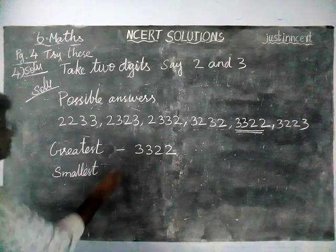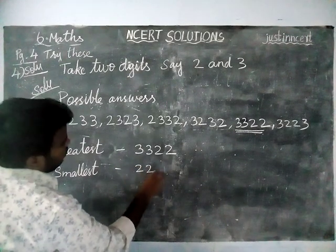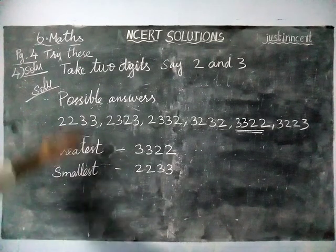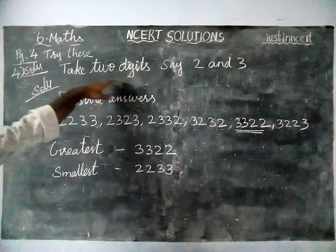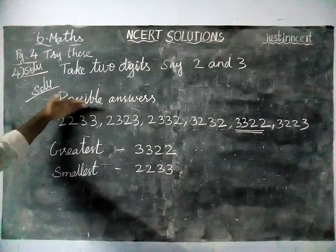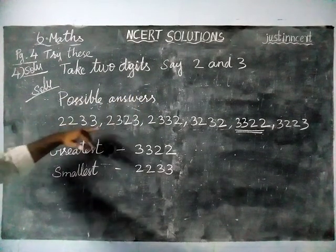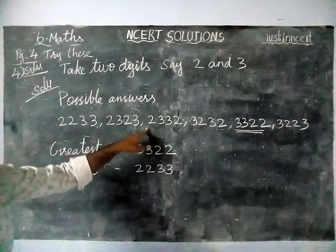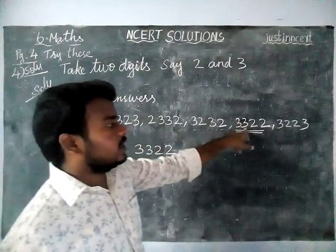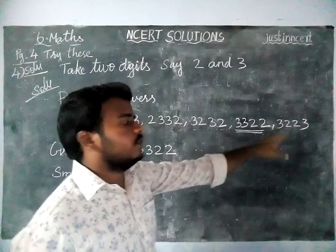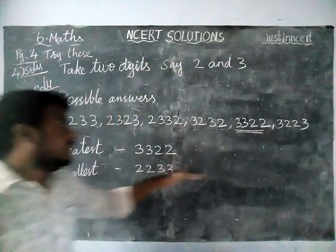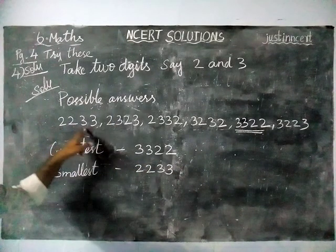Let me explain again. The 2 digits given are 2 and 3, and we can use both digits 2 times each. The possible answers are: 2233, 2323, 2332, 3232, 3322, 3223. In this, the greatest number is 3322, and the smallest number is 2233.